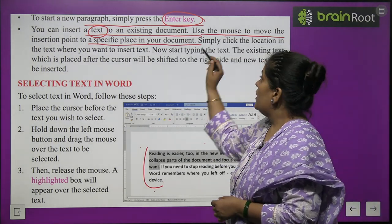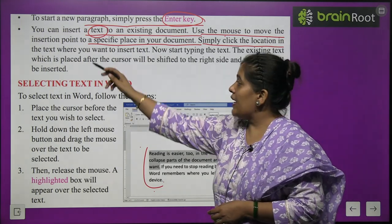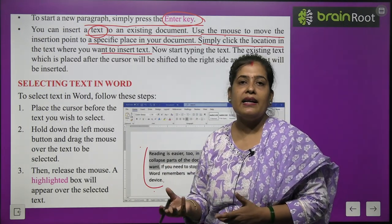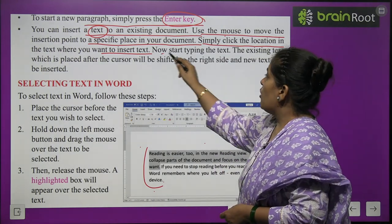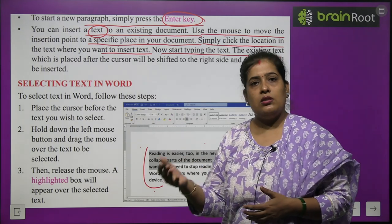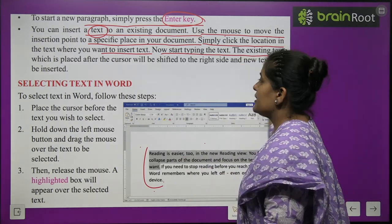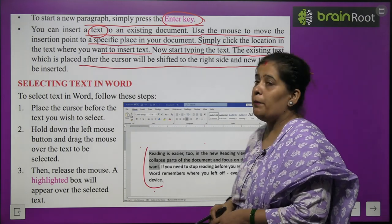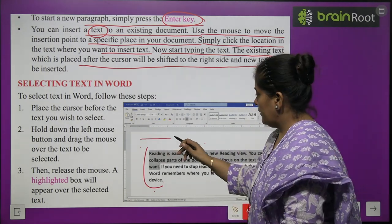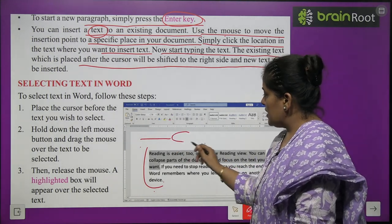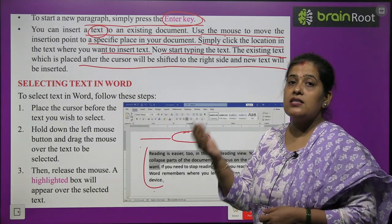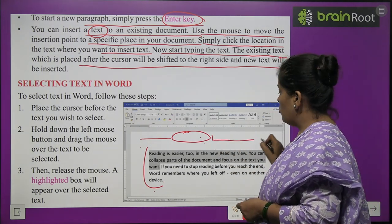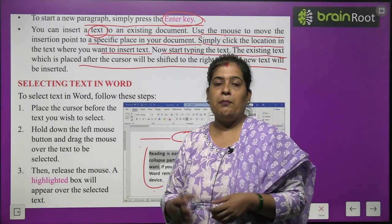Simply click the location in the text where you want to insert text using the mouse. Now start typing the text. The existing text placed after the cursor will be shifted to the right and the new text will be inserted. You can continue your work — the cursor will move automatically.